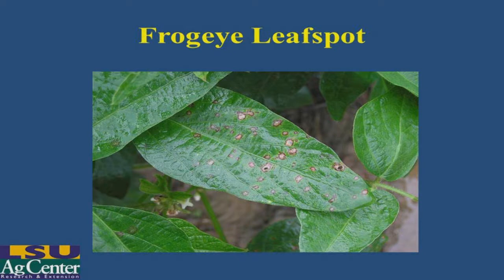If this number of lesions would be found on an entire plant, then we would have an epidemic starting in that particular area. But usually we see just a few spots on a few leaves or leaflets, and this is the extent of the disease development.